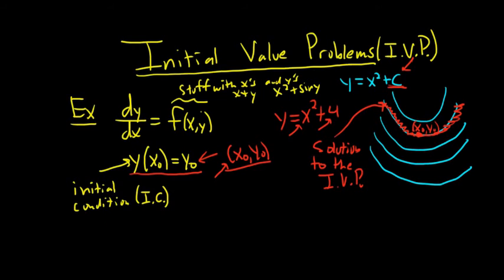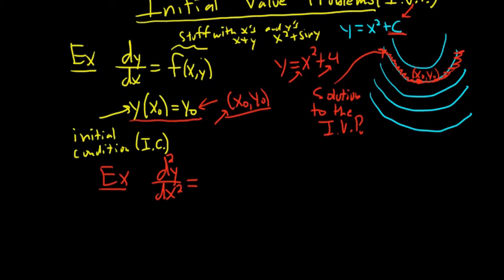So that's an initial value problem. Here's another example. Say we had dy/dx equal to, now actually, let me do a second derivative here. There we go. Equal to some stuff with x, y, and the first derivative. So now we have an order 2 differential equation. So x, y, and then the first derivative. So this is just some stuff with x, y, and the first derivative.